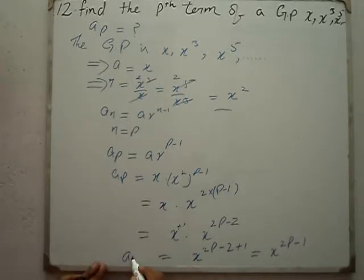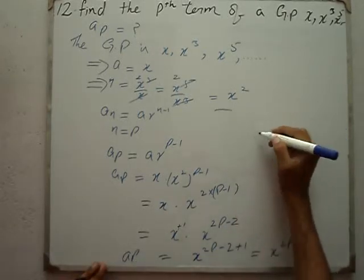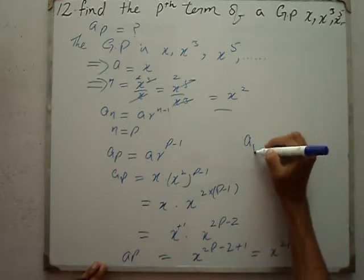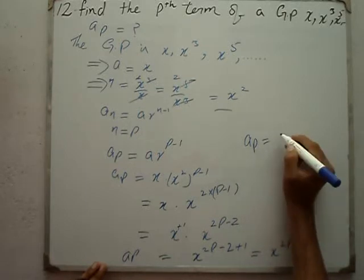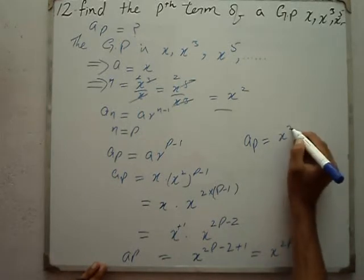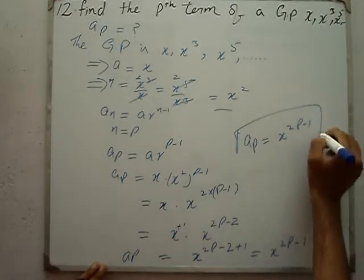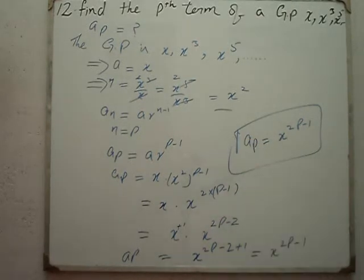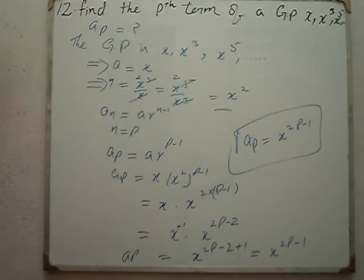So A_p is equal to x^(2p - 1). This is the final answer. With this, exercise element 4 will be finished.